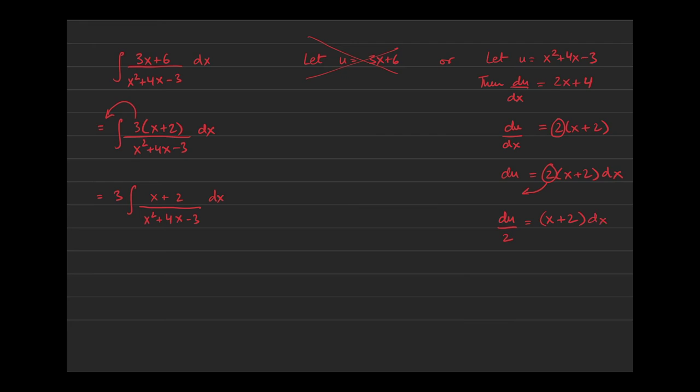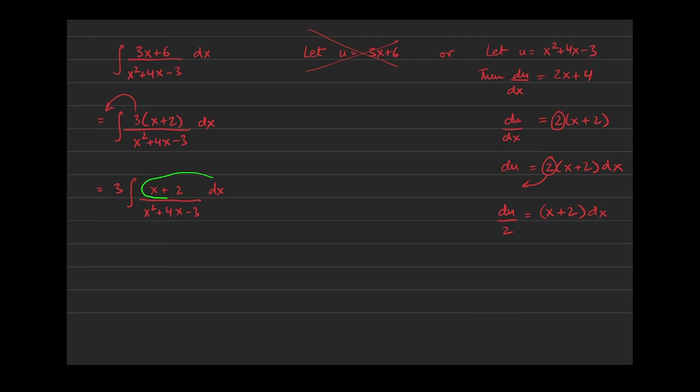Now, here's why this is beneficial. This whole thing is going to get replaced with du over 2 because that's exactly what we said here. x plus 2 times dx is du over 2. So that whole bubble can get replaced with du over 2. This whole thing can be replaced with u because that's what we said at the very beginning. u equals x squared plus 4x plus 3 minus 3. Now, we're ready to go from x-land to u-land because all the x's are accounted for. Everything that has an x can be changed into a u.